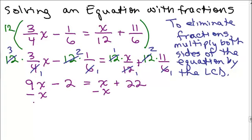We're going to subtract x from both sides. And we'll add 2 so that we have the variables on the left side and the constants on the right. So 9x minus 1x is 8x. 22 plus 2 is 24.